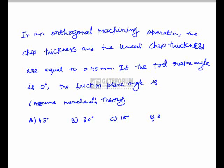In an orthogonal machining operation, the chip thickness and uncut chip thickness are both equal to 0.45 mm. If the tool rake angle is 0 degrees, we need to find the friction plane angle using Merchant's theory. According to Merchant's theory, the relation between shear angle φ, rake angle α, and friction angle β is: 2φ + β − α = 90 degrees. Here α is the rake angle, β is the friction plane angle, and φ is the shear angle.